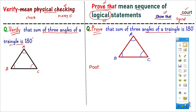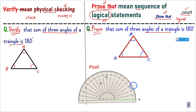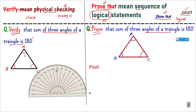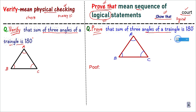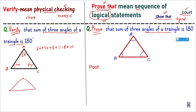To verify, I will do physical checking. I will take a protractor and measure the angles. For example, if one angle measures 60°, another 70°, and another 50°, I add them: 60 + 70 + 50 = 180 degrees. This confirms the statement for this triangle — that is verification.